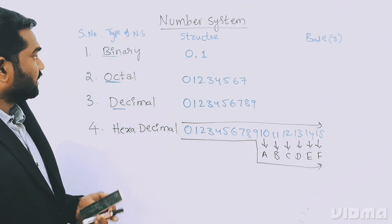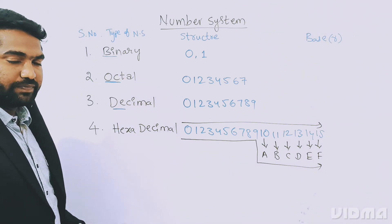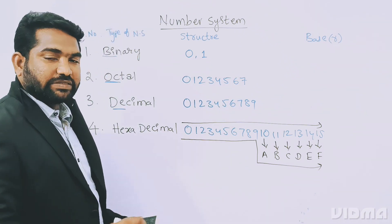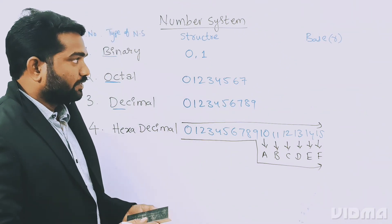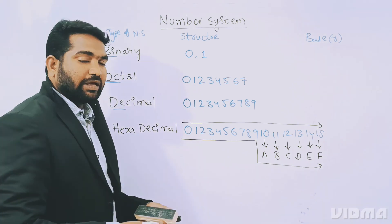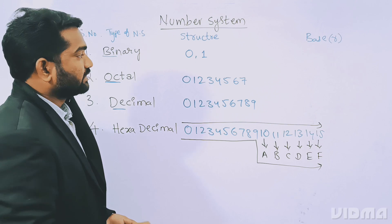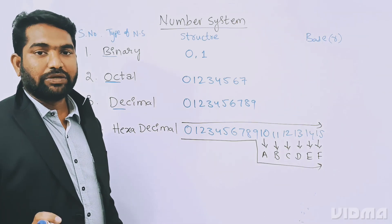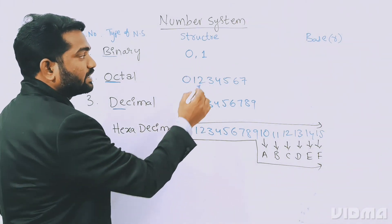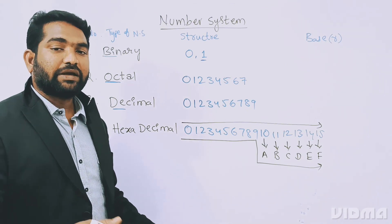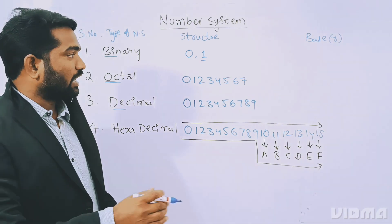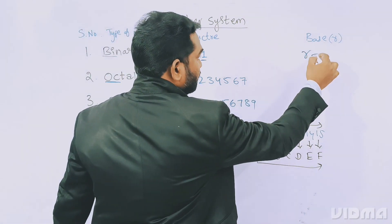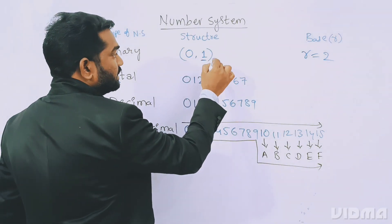Now, what is the meaning of base or radix? The base is a value which is greater than the maximum available digit in any number system. In binary, there are two values — 0 and 1 — and the maximum value is 1. The base must be greater than 1, so the immediate greater value is 2. Therefore, base r equals 2 for binary. The structure is: digits 0 and 1, base is 2.